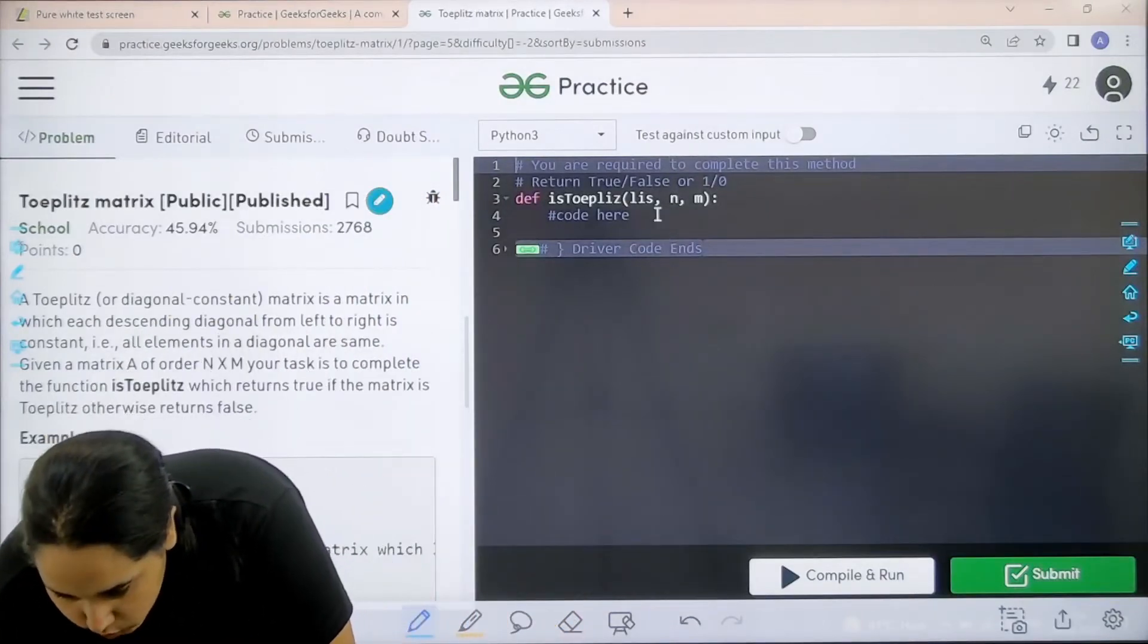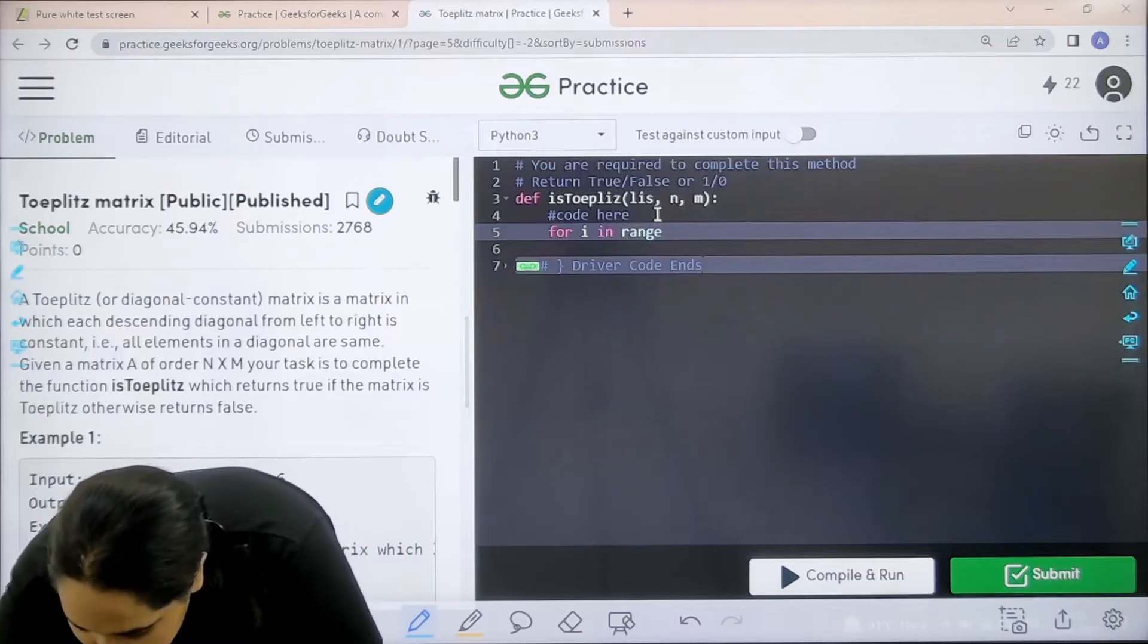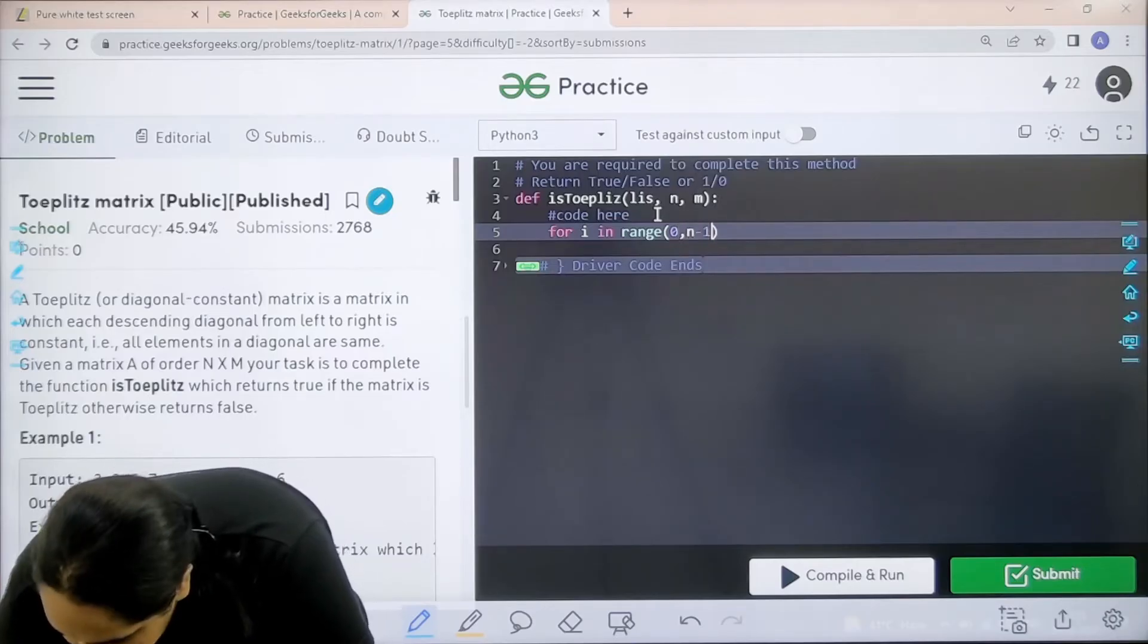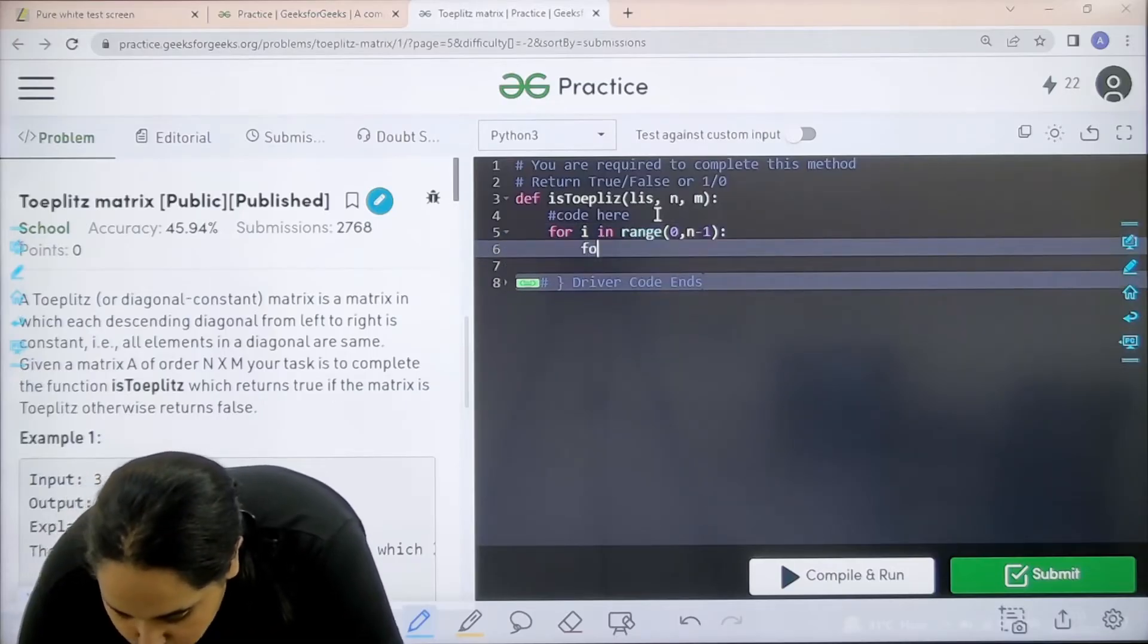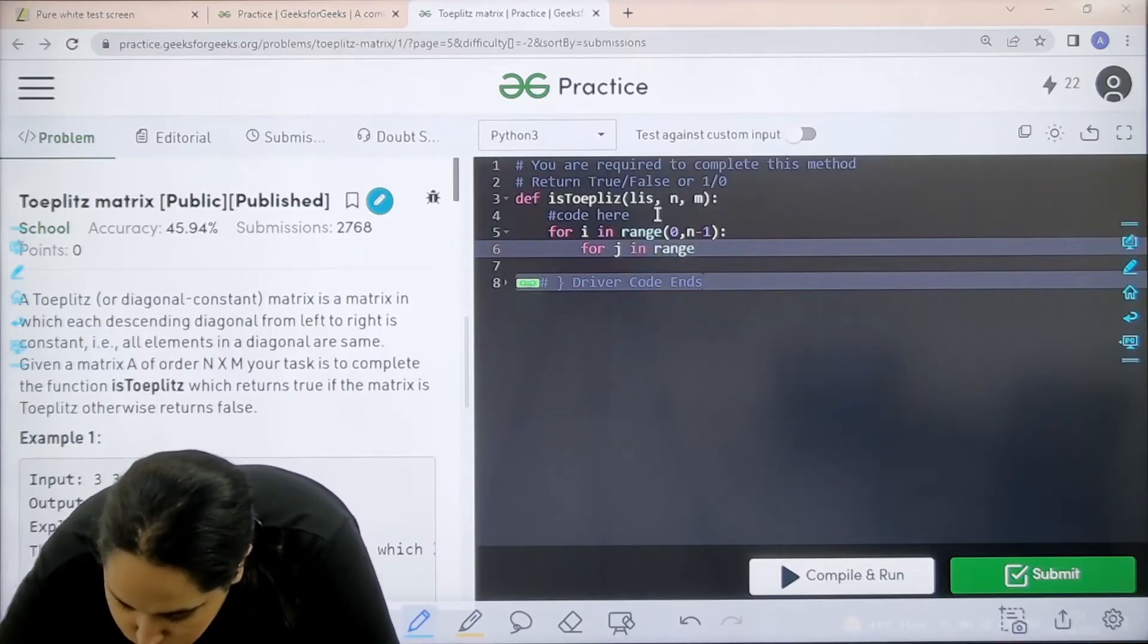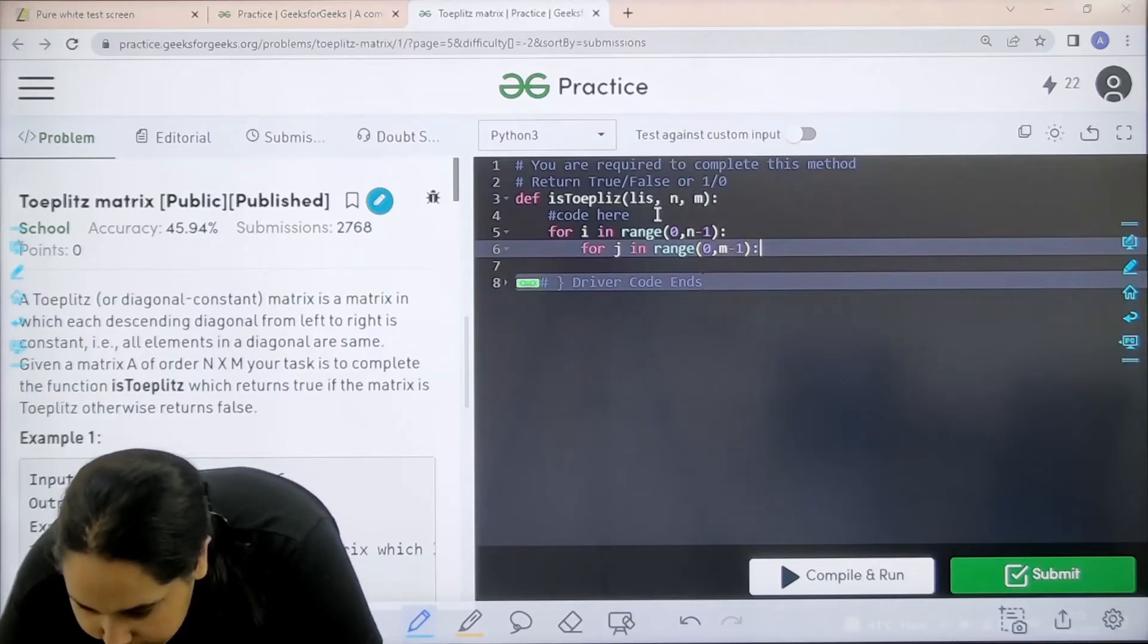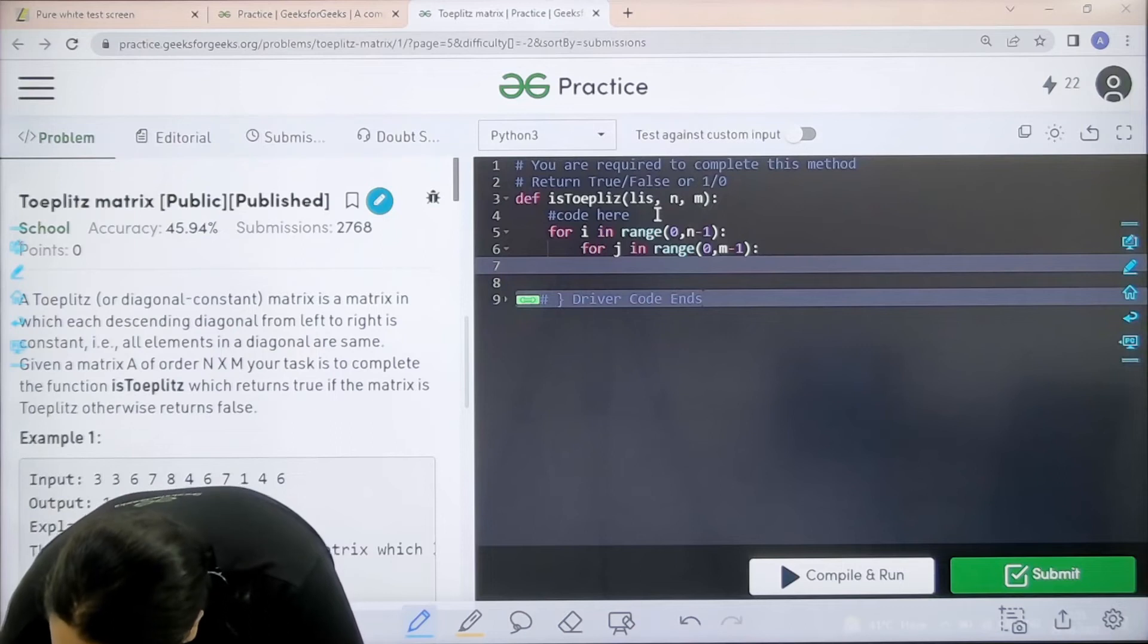Now first for loop i in range, and the range is from 0 to n minus 1. Now this is first one. Now the second loop, j in range. This would also be from 0 to m minus 1. Now I need to check if the diagonal elements are same or not. So let's check that.